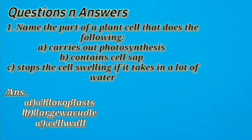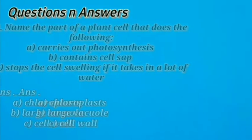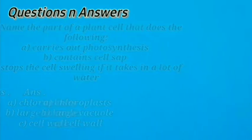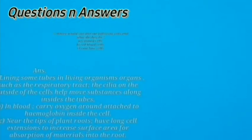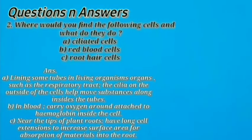Part A: carries out photosynthesis. B: contains cell sap. C: stops the cell swelling if it takes a lot of water. The answer is given below. Our second question is: Where will you find the following cells and what do they do?